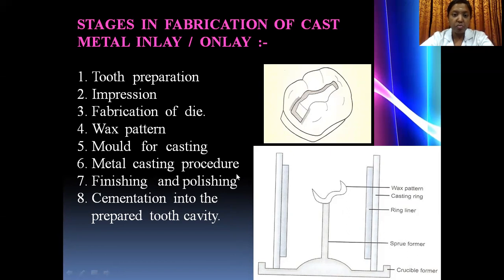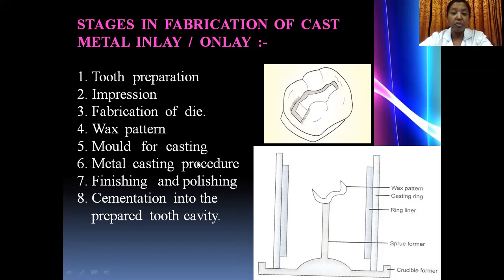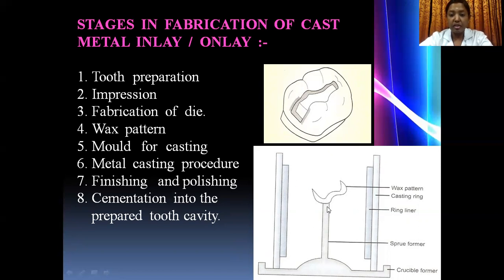The next step is the metal casting procedure, wherein the centrifugal casting machine is most commonly used. Whichever alloy is used — most commonly base metal alloys for inlays and onlays, and very rarely gold alloys — the metal is melted and cast using the centrifugal casting machine, taking up the shape of the wax pattern. Once the casting procedure is completed, the entire assembly is kept on the bench for cooling.